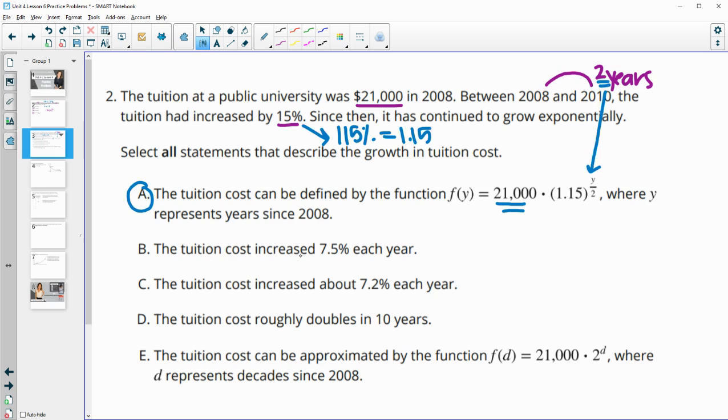B says the tuition cost increased 7.5% each year. So let's check this out. Probably not because we don't just divide the increase by the number of years. So you need to take the growth factor and we're going to do this growth factor to the one half. Since this is 1.15 for two years, we want to do half of that. So if you type in 1.15 to the one half power in your calculator, you get 1.072. So then this part is going to be how much it grew. So 0.072 equals 7.2%. So that's actually C, not B.